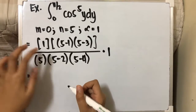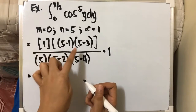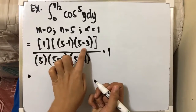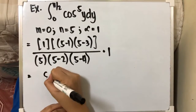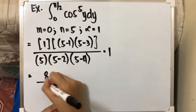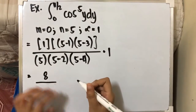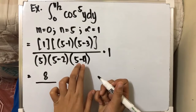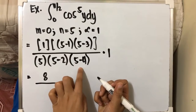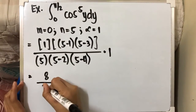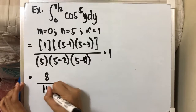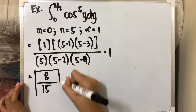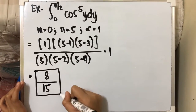Now we calculate: the numerator gives 4 times 2, which is 8, times 1, that's 8. The denominator gives 5 times 3 times 1, which is 15. So the result of our equation is 8 over 15.